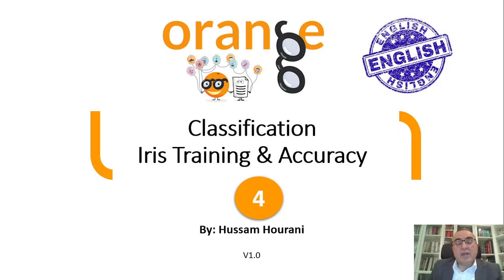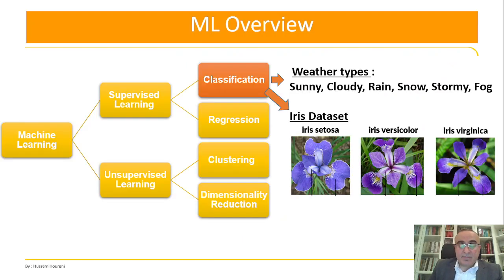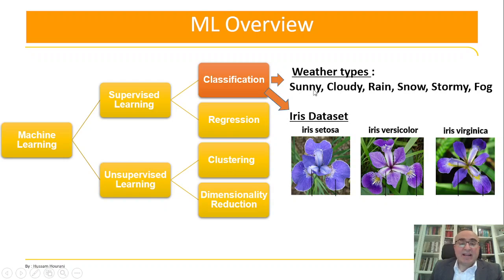Hello everyone, today we will talk about classification — precisely iris training and accuracy, which is the most interesting thing in Orange Data Mining and in AI and data science. Before we go into the example, let me recap what classification means: we need to classify our database into certain classes.